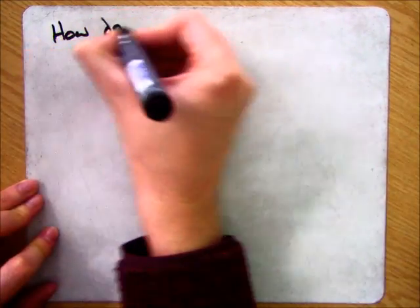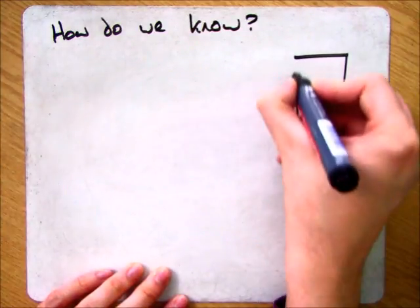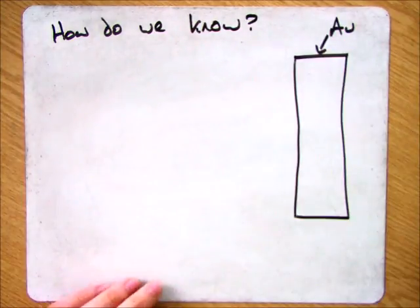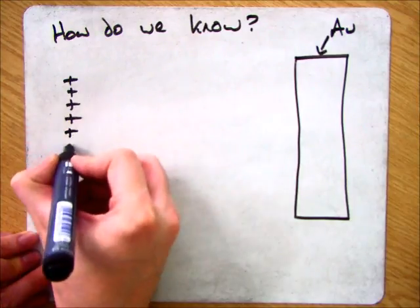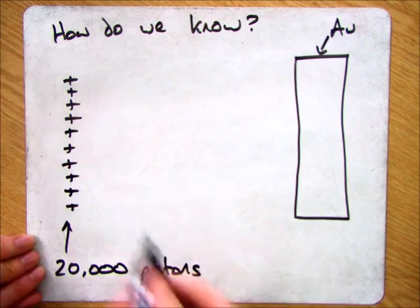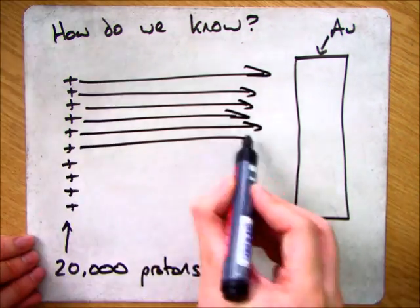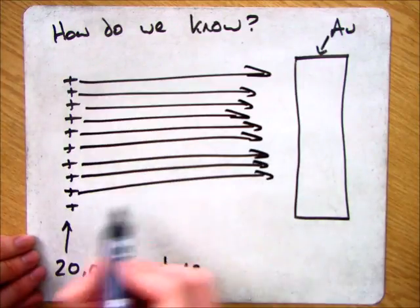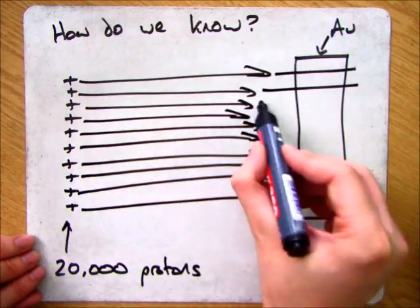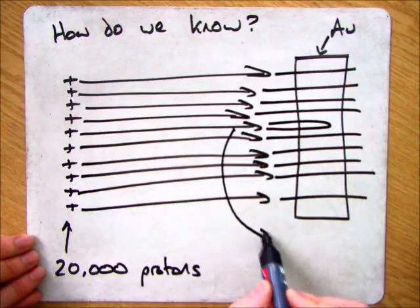So, what we're going to talk about now is how we actually proved this. And this is all down to the Rutherford alpha particle scattering experiment. Now, we've talked about Rutherford in the past. Now, what he actually did was fired loads of protons in, known as alpha particles, 20,000 in total, into some gold. And what he found was that about 99% of those alpha particles went straight through the foil. And some of them got deflected. And only a very small number actually rebounded and went straight back.